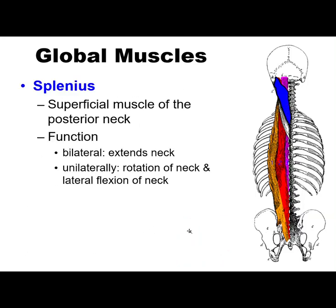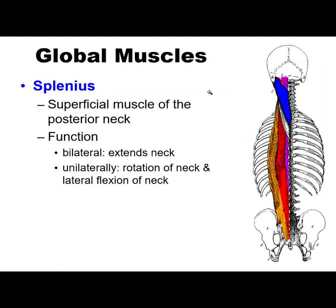One more global muscle in the cervical region, shown in blue here, is the splenius. It is superficial to the other muscles. Bilaterally, it extends the cervical spine; unilaterally, it rotates and contributes to lateral flexion of the cervical spine.